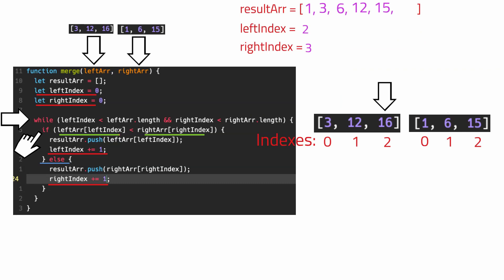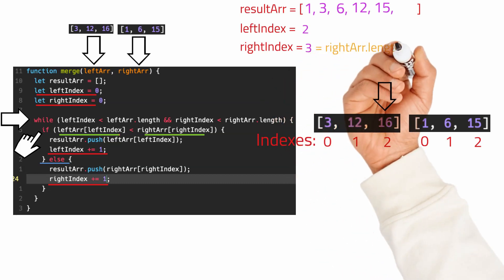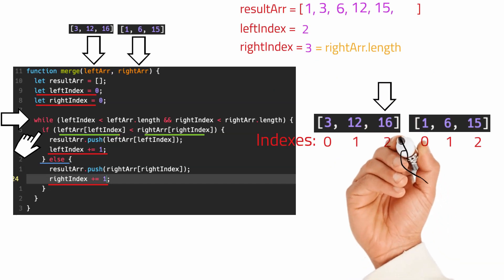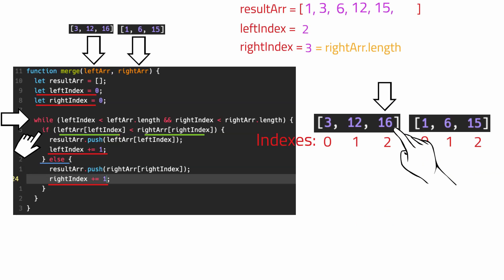Now at this point, the while loop will terminate because it only continues if the left index is less than the left array's length AND the right index is less than the right array's length. At this point, our right index equals the right array's length. As you've probably noticed, there's still a 16 left in the left array that hasn't been pushed to the result array, but the while loop is already complete — so what do we do?